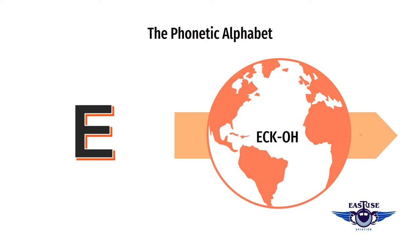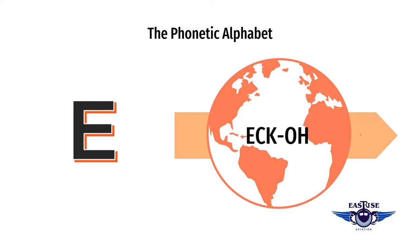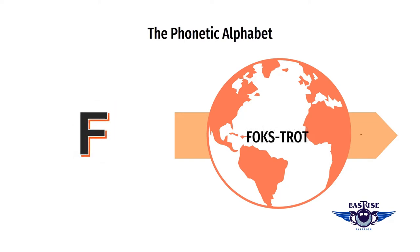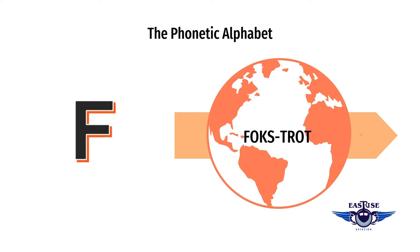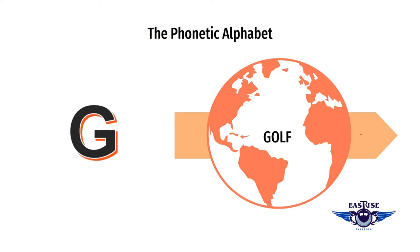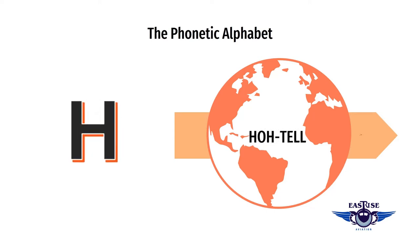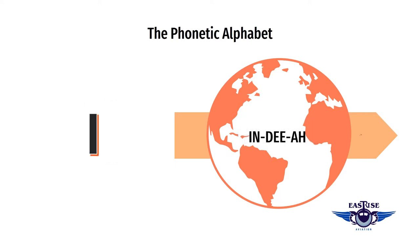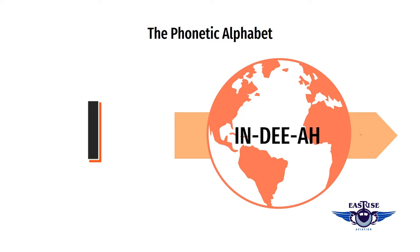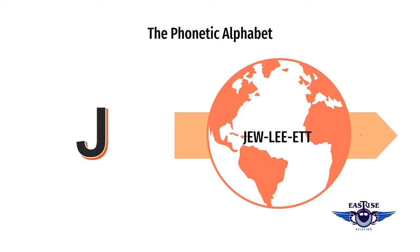E is for Echo. Echo. F is for Foxtrot. Foxtrot. G is for Golf. Golf. H is for Hotel. Hotel. I is for India. India. J is for Juliet. Juliet.